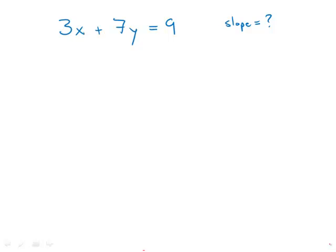In the x-y plane, what is the slope of the line with the equation 3x plus 7y equals 9? The trick of this problem is we need to solve for y, get y by itself, because then what we'll have is what's called slope-intercept form: y equals mx plus b, and the coefficient of x will be the slope.